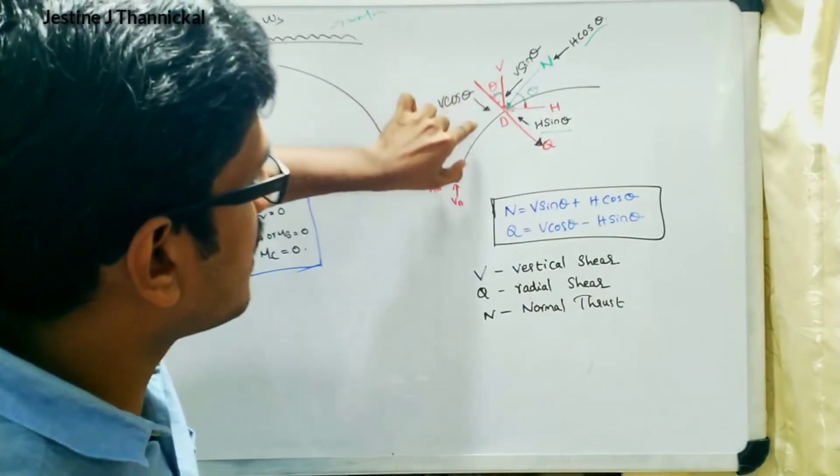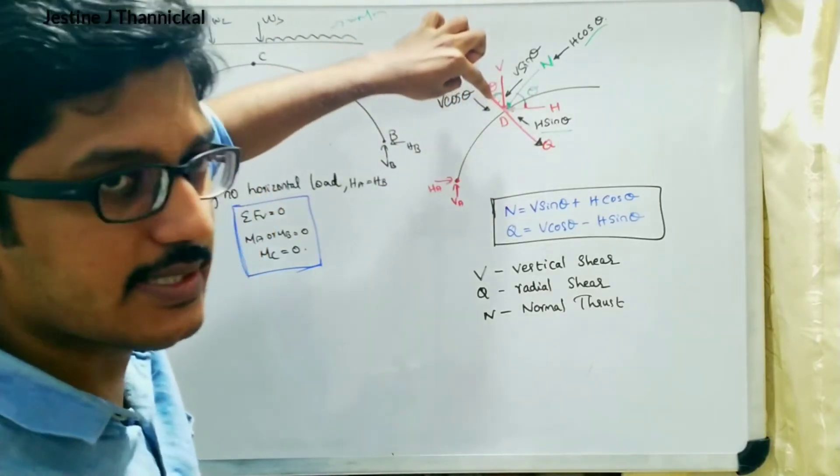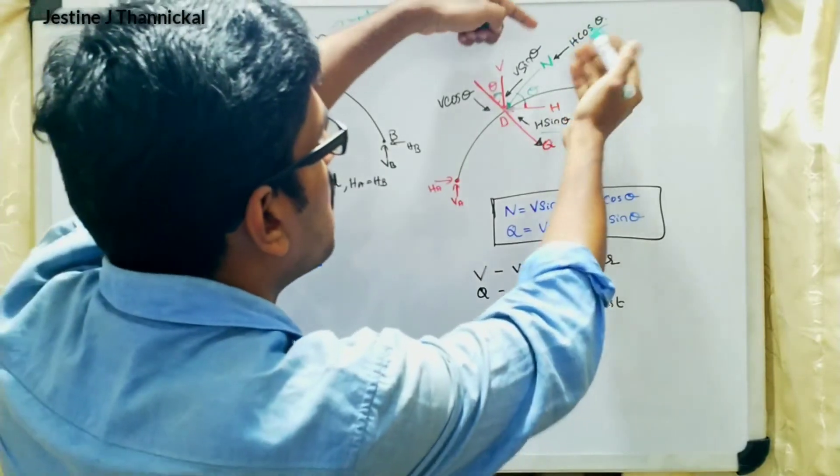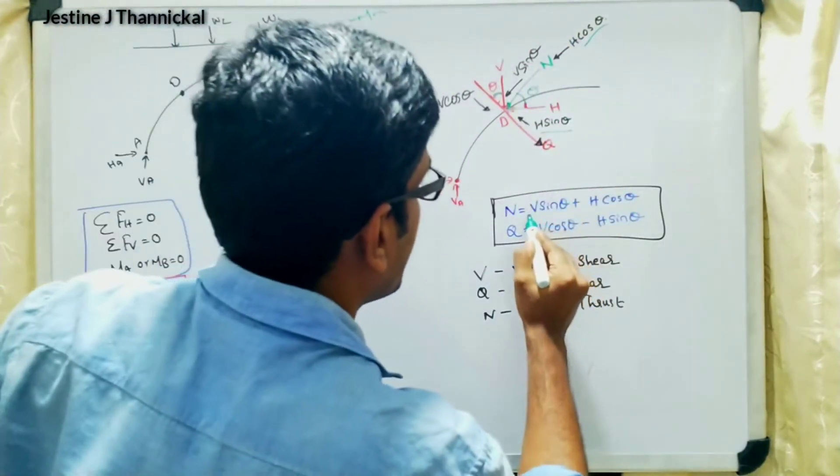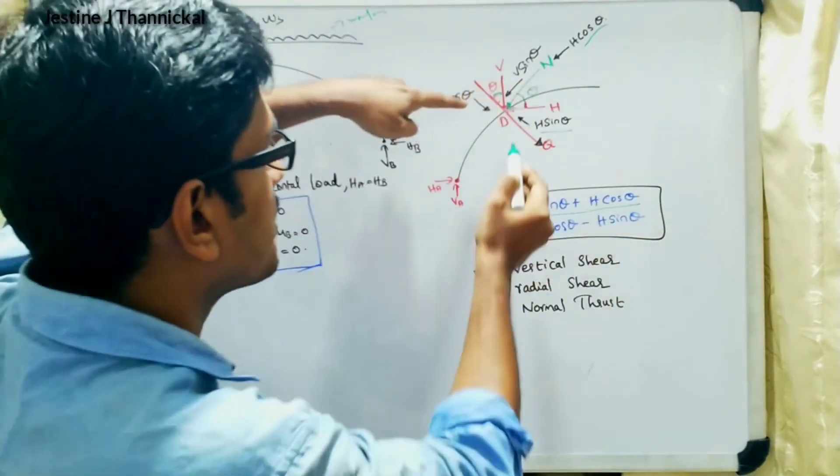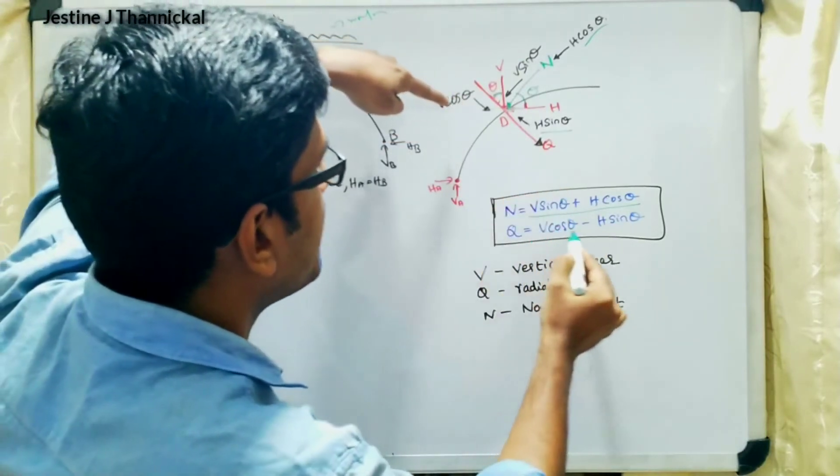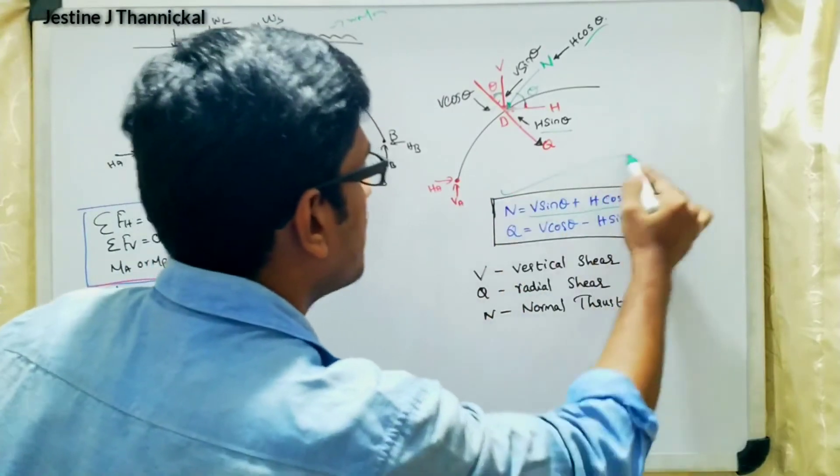And here we know if you split this component: V cos theta in this direction and V sin theta in this direction. Both V sin theta and H cos theta are in the same direction, so we can write as V sin theta plus H cos theta. And here both directions are opposite, so V cos theta minus H sin theta.